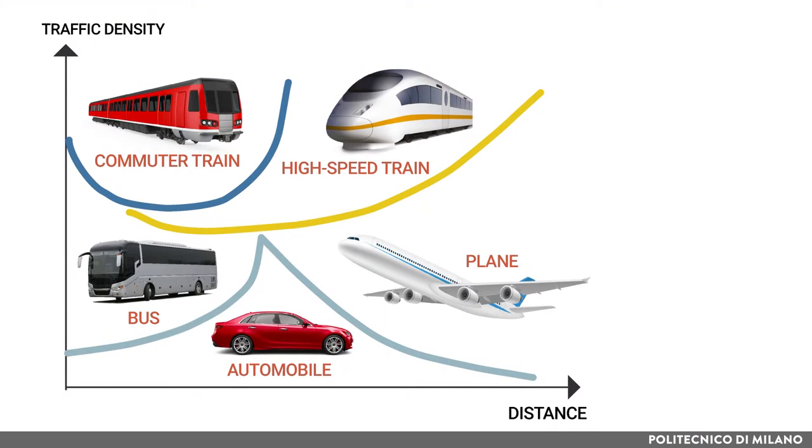Despite these figures highlighting that railways are competitive on the transport market, it is not easy to propose a modal shift from other means of transport. This is due to the fact that, on the one hand, any means of transport has its own merits in certain contexts. And on the other hand, modern railways are also facing challenges and limitations. Considering the traffic density as a function of the distance to be covered, it is clear that there are ranges of distance where different means of transport have advantages and hence take the largest share.